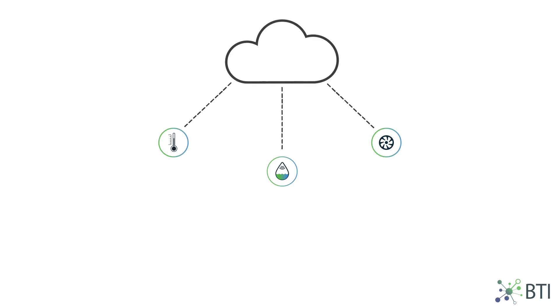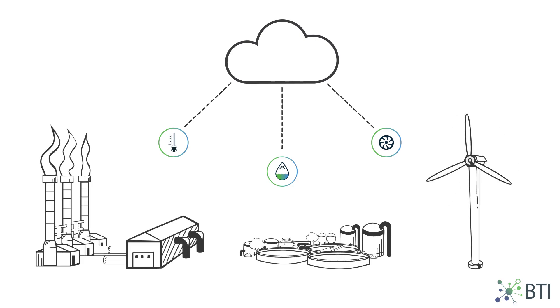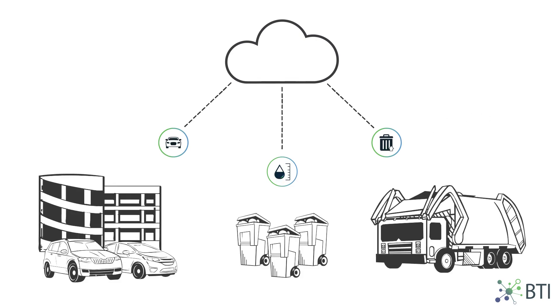Massive sensor networks are the main engine driving the Internet of Things. From environmental and energy to parking and occupancy, battery-operated sensors are used across all industries to gather huge amounts of critical data.